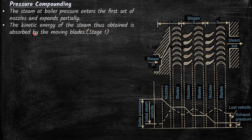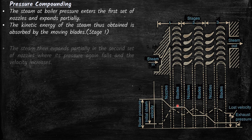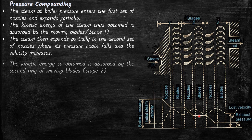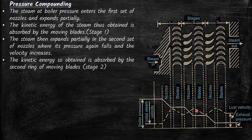The kinetic energy of the steam obtained is absorbed by the moving blades. As it moves over the set of moving blades, the velocity reduces but the pressure remains constant. In an impulse turbine, as the steam moves over the moving blade, expansion of steam does not take place. The steam then expands partially in the second set of fixed nozzles, where its velocity again increases and the pressure drops. When it moves over the next moving blade, the pressure remains constant and the velocity decreases.